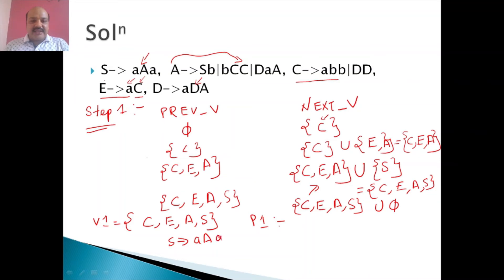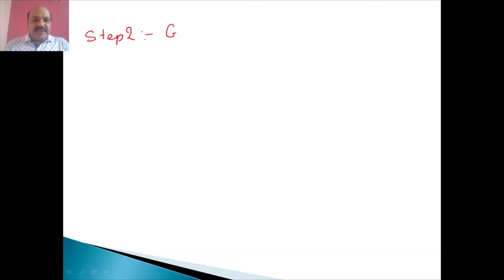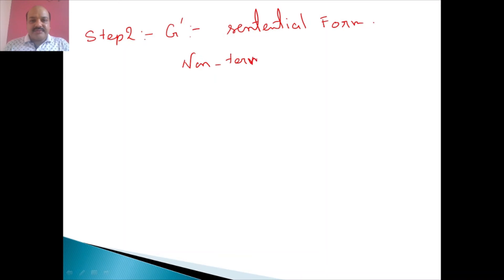So the new variable set V1 will comprise {C, E, A, S}, and the new production set P1 will comprise: S is rewritten as AAAA; A is rewritten as SBBC; C is rewritten as ABB; and E is rewritten as AC. Now we have to find the equivalent grammar G prime in which every symbol appears in some sentential form — covering both non-terminal and terminal symbols — starting from S and tracing which symbols are reachable.